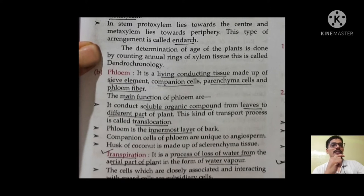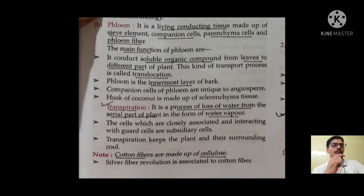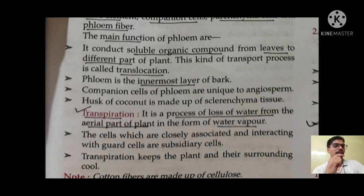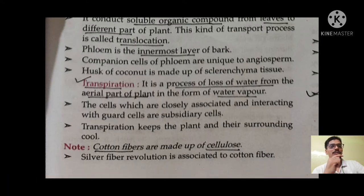Next is phloem — a living conducting tissue made up of sieve elements, companion cells, parenchyma cells, and phloem fibers. Its main function, very important from the exam viewpoint, is that it conducts soluble organic compounds from leaves to different parts of the plant. This kind of transport is called translocation. Phloem is the innermost layer of the bark. Companion cells and phloem are unique to angiosperms. Transpiration is the process of loss of water from the aerial parts of the plant in the form of water vapor. Cotton fiber is made up of cellulose.